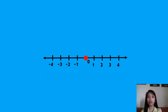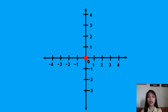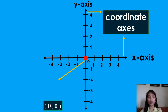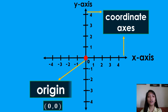We have here a horizontal number line. If it intersects a vertical number line at point (0, 0), a Cartesian plane is formed. The two number lines are called the coordinate axes. The horizontal number line is called the x-axis, while the vertical number line is called the y-axis. The intersection of the two axes at point (0, 0) is called the origin.